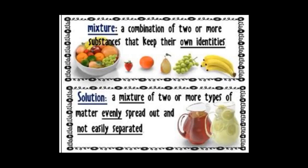Let's take an example of different fruits. If we collect them in a bowl, can we identify them? Yes, we can identify them and separate them easily. But if we blend these fruits together, then can we identify them? No, we cannot identify them — we cannot even separate them. So this is the difference between a heterogeneous mixture and a homogeneous mixture.